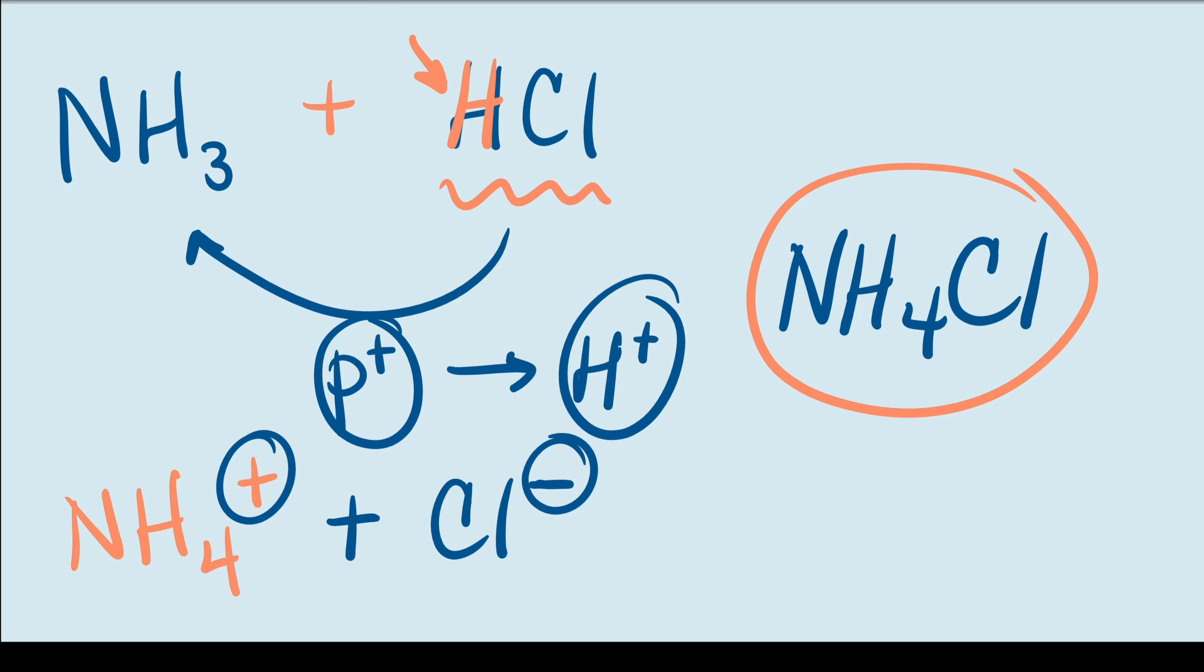Nonetheless, almost all scientists would still agree that hydrochloric acid is a real acid and that ammonia is a real base. So hopefully, you now understand the difference between these two definitions of acids and bases.